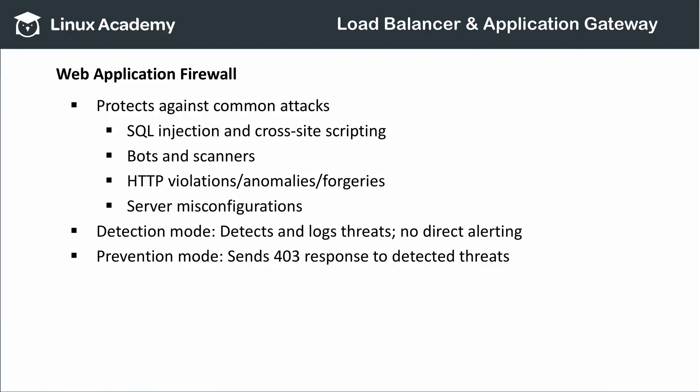The Web Application Firewall protects against the most common forms of web attacks such as SQL injection and cross-site scripting, known bots and scanners, problems with HTTP requests such as forgeries, protocol violations and missing headers, and common server misconfigurations. It runs in detection or prevention mode. Detection mode logs suspicious activity but allows it to continue, while prevention mode returns a 403 error to the client whenever a problem is detected and logs the incident. In neither mode will you receive a direct alert about prevented incidents.